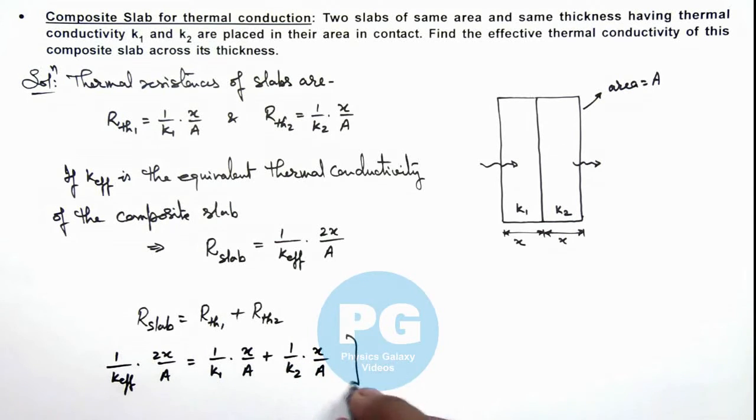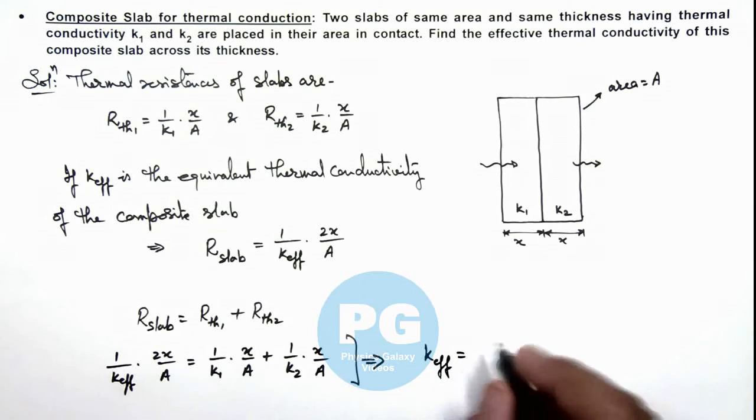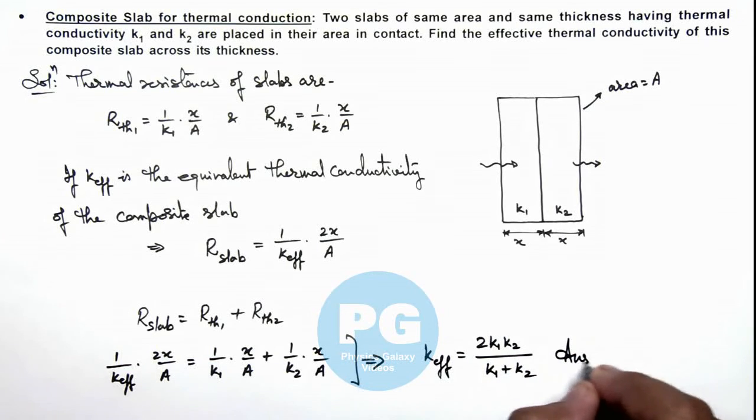Then simplifying this relation will directly get the value of the effective thermal conductivity given as 2k1k2 divided by k1 plus k2. That is the result of this problem.